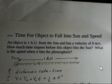So this object is one astronomical unit away from the Sun, this drawing is not to scale. But here's our Sun, one astronomical unit away, and we want to know the length of time to fall into the Sun.